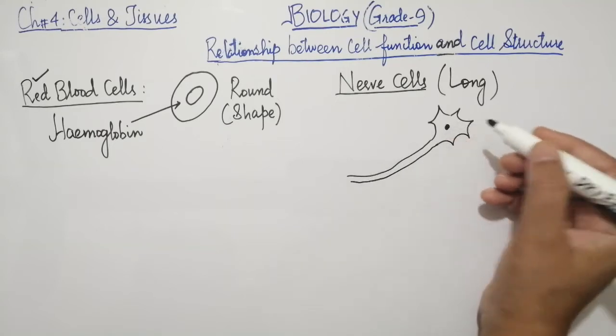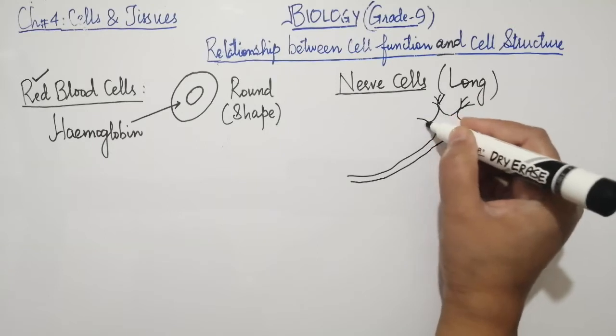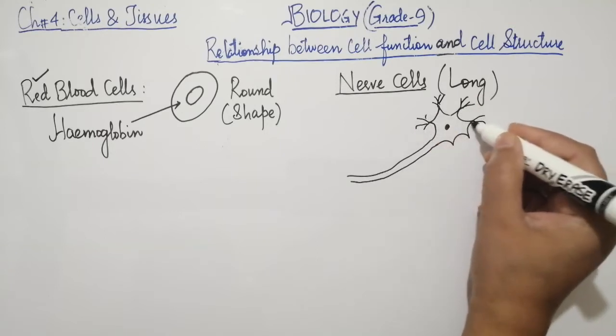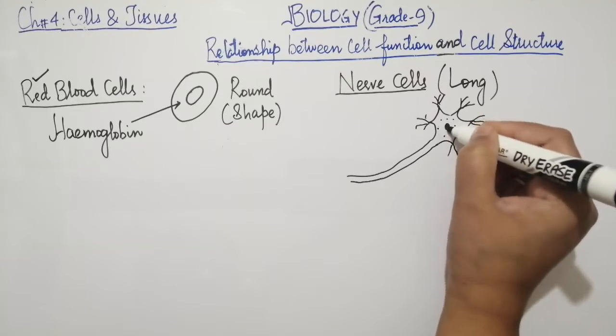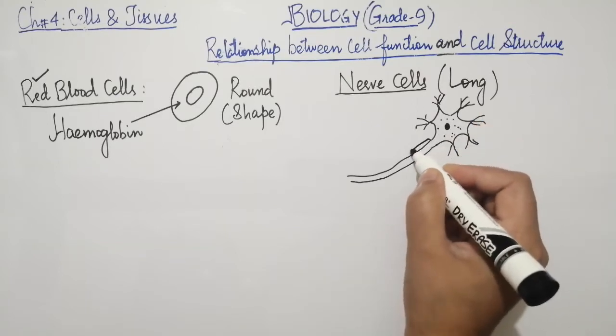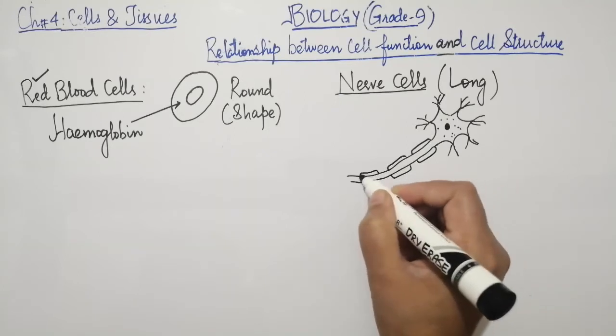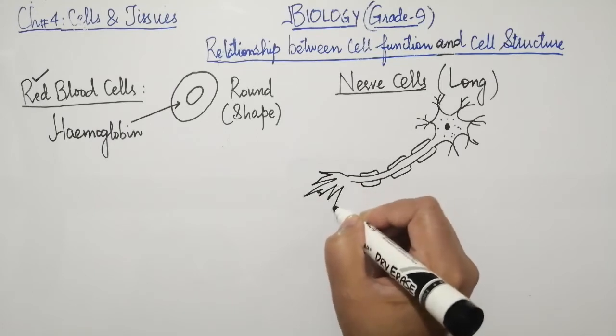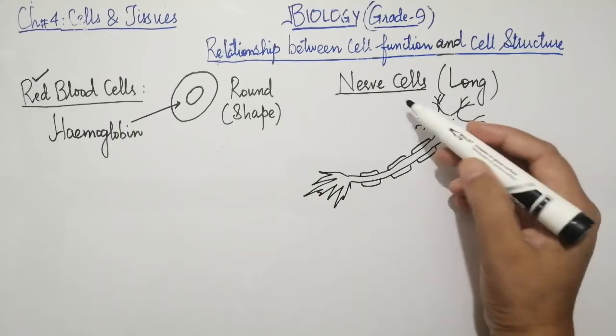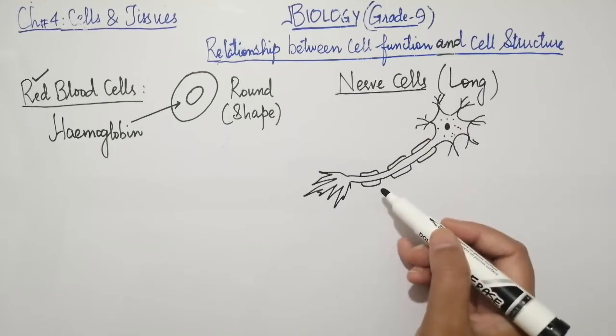This is a structure of a nerve cell having branches arising from its main part, that is the cell body, having cytoplasm and nucleus in the center. And there is a long rod shape structure in the cell called axon. This structure is called nerve cell. Now nerve cells are up to one meter long.